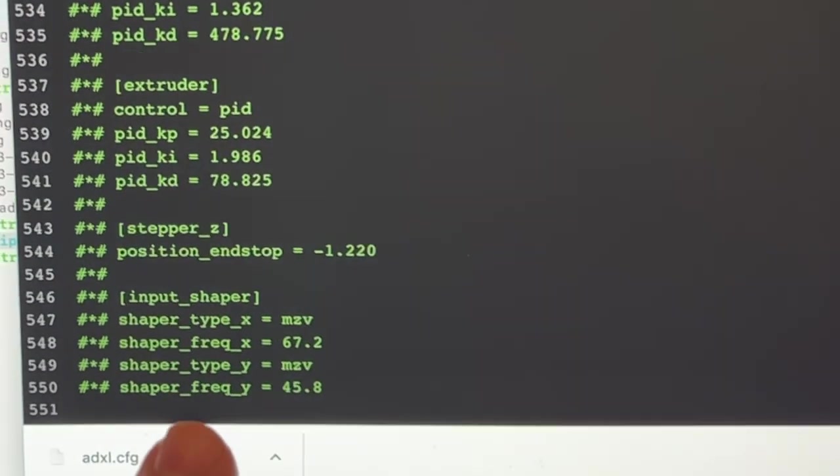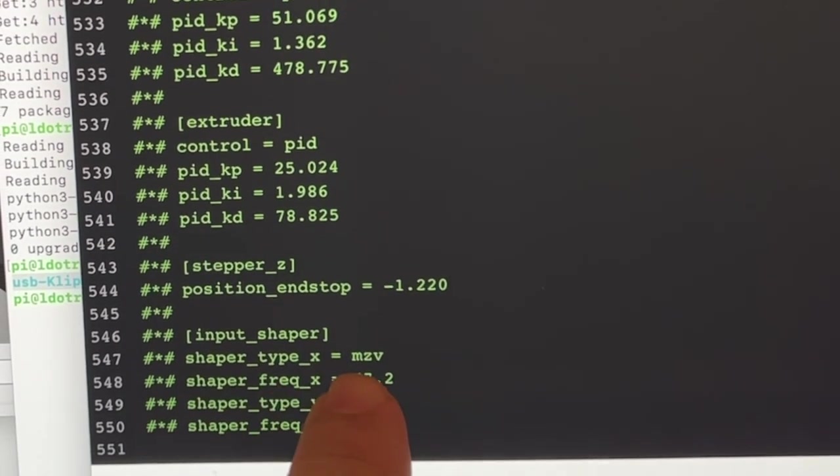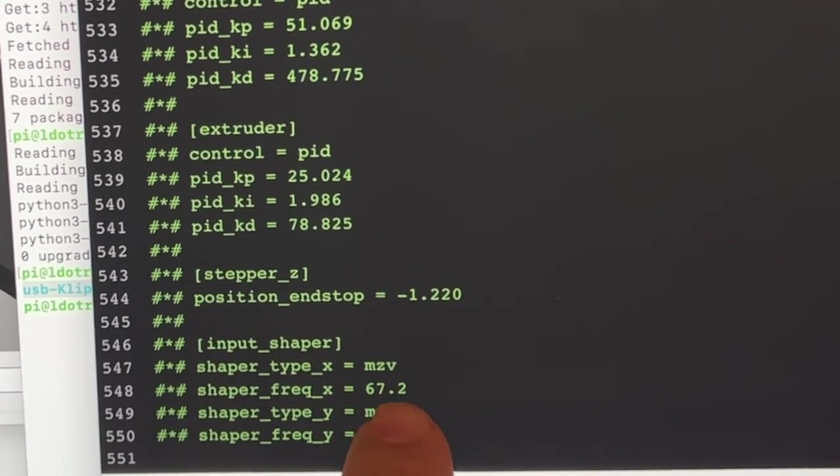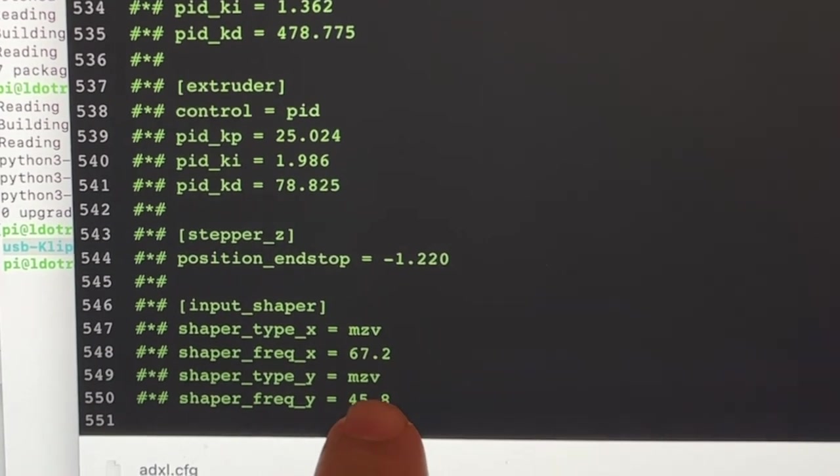I went into my printer.cfg file and you can see right here that it recommends shaper for X is MZV 67.2 and shaper for Y, also MZV and 45.8.